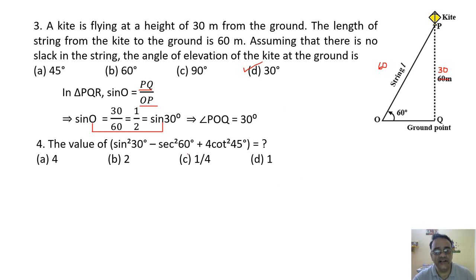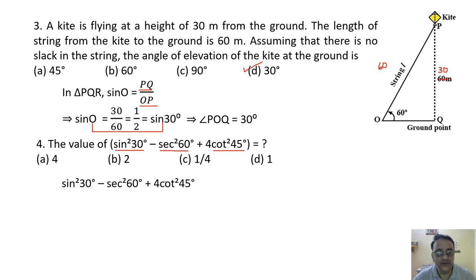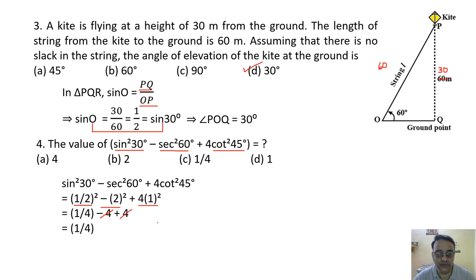Question 4: Find sin²30° − sec²60° + 4cot²45°. sin 30° = 1/2, sec 60° = 2, cot 45° = 1. Substituting: 1/4 − 4 + 4 = 1/4. The correct option is option C.